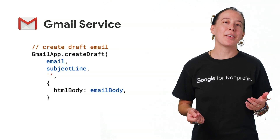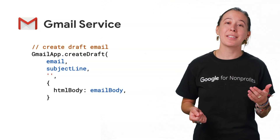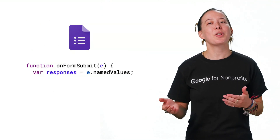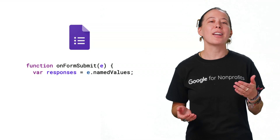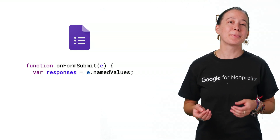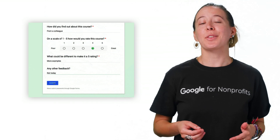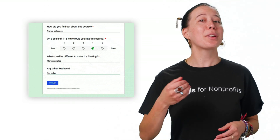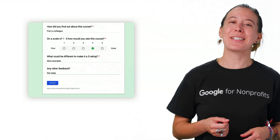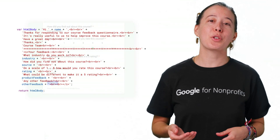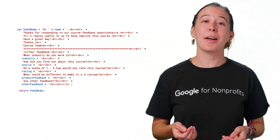This Apps Script cleverly uses the Gmail service to create a draft email every time a new form response is submitted. The workflow is kicked off by the user's submission because the script includes an on-form-submit trigger. The form asks questions like how did you find out about this course, or on a scale of one to five, how would you rate this course, and includes the responses in the email draft, which are formatted using a bit of HTML.